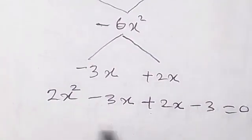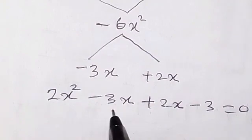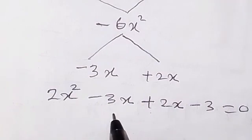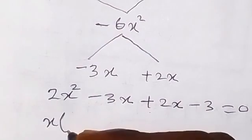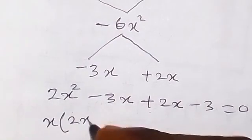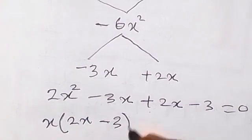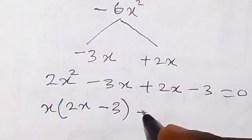By the time we factorize from here now, what is common from here is x. So we can take x out from these two numbers and we are going to have x into bracket 2x minus 3. Then what is common here is just plus 1.